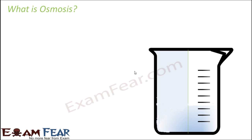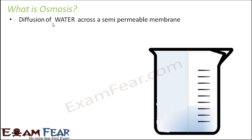The next mechanism we are going to talk about is osmosis. Osmosis is conceptually very similar to diffusion, but in this case we only talk about movement of water. Osmosis is the diffusion of water across a semi-permeable membrane. Semi-permeable means it selectively allows certain substances to pass through it. As per osmosis, water always moves from a region of higher concentration towards a region of lower concentration. In this example, you have a beaker partitioned into two halves by a semi-permeable membrane.